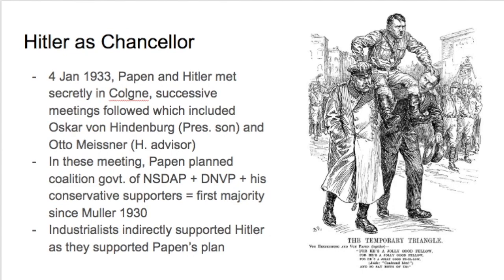Finally, Papen and Hitler met in Cologne, and successive meetings followed including Oscar von Hindenburg — the president's son — and Otto Meissner, Hindenburg's advisor. In these meetings, Papen planned a coalition government between the NSDAP, the DNVP, and his conservative supporters. This would be the first majority government since the 1930 Mueller government. Industrialists directly supported Hitler as they backed Papen's plan.